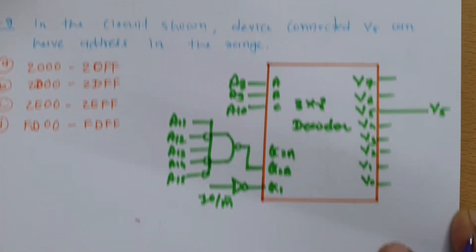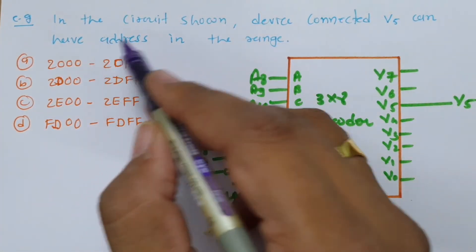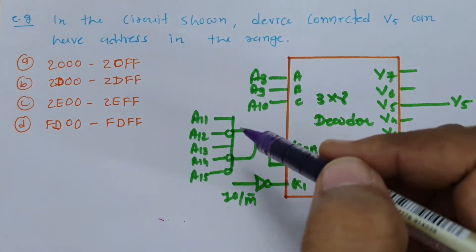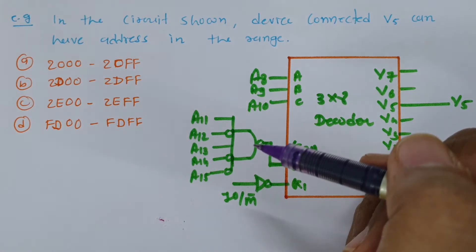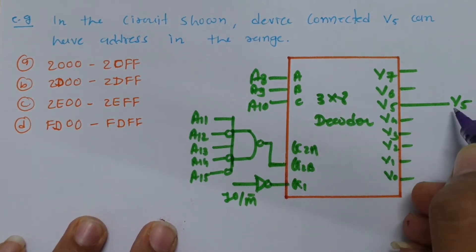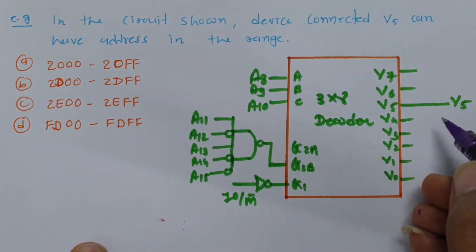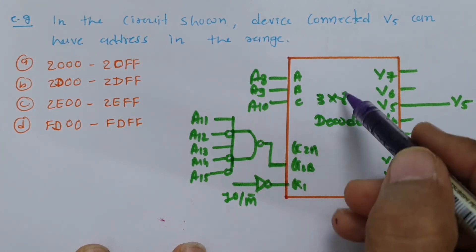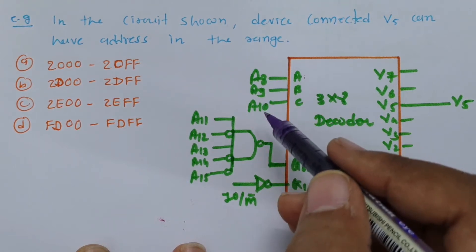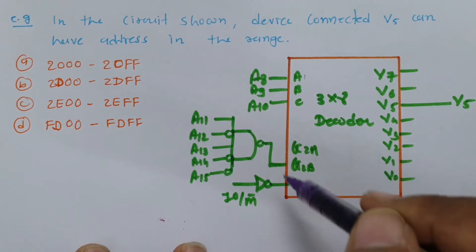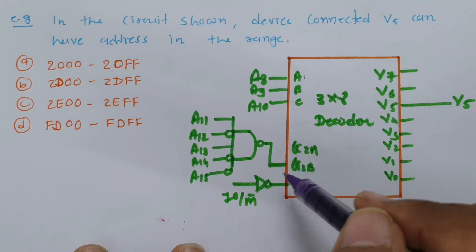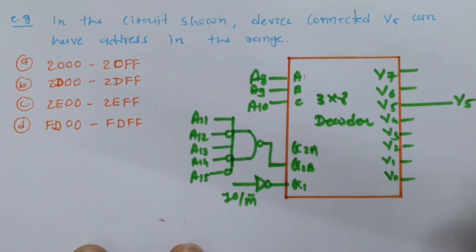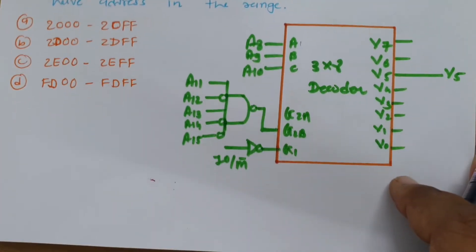Let us look at a second problem. In this circuit diagram, the device connected with V-phi can have addresses in range A, B, C, or D — we need to identify the correct range. V-phi is connected to memory via a 3×8 decoder. Terminals A, B, C of the decoder are connected to A8, A9, and A10, and the chip select is driven by A11, A12, A13, A14, and A15.